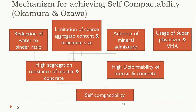In order to obtain self-compacting concrete, two aspects are required. First, it should have high resistance to segregation. Second, it should have high deformability — that is, high flowability. These are the two key properties of self-compacting concrete.